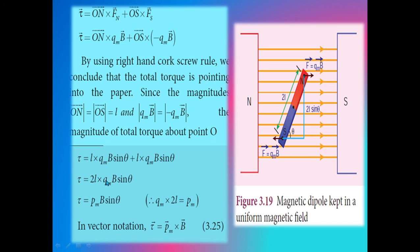We already know the formula for magnetic dipole moment: Qm × 2L = Pm. So the final result is τ = Pm × B sinθ. This is a very important formula for objective type and problem questions.